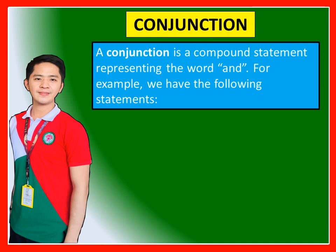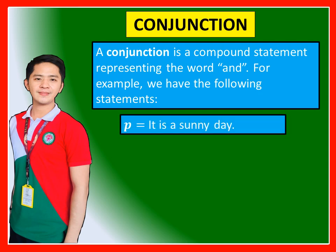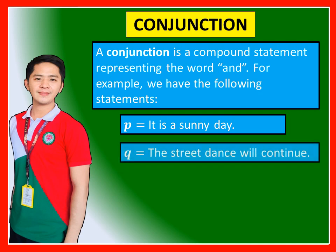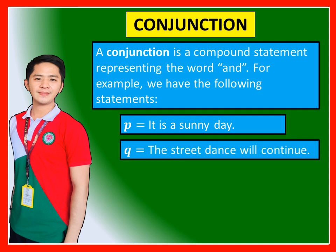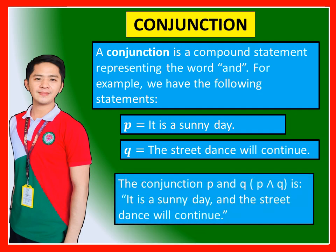Conjunction: A conjunction is a compound statement representing the word 'and.' For example, P is 'It is a sunny day' and Q is 'The street dance will continue.' The conjunction P and Q is: 'It is a sunny day and the street dance will continue.'